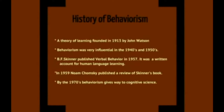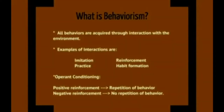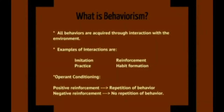By the 1970s, behaviorism gave way to cognitive science. Let's take a look at the main tenets of behaviorism. Behaviorism is the theory that all behaviors are acquired through interaction with the environment. Examples of interactions include imitation, reinforcement, practice, and habit formation.